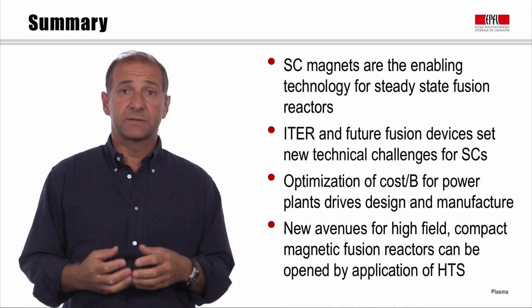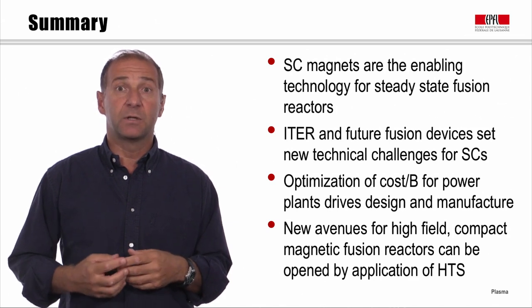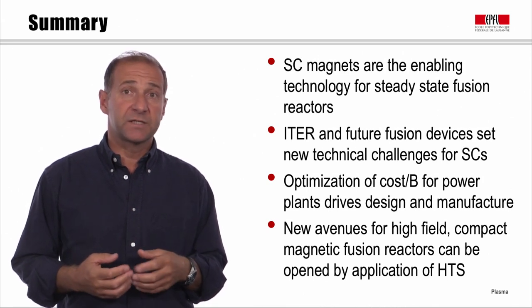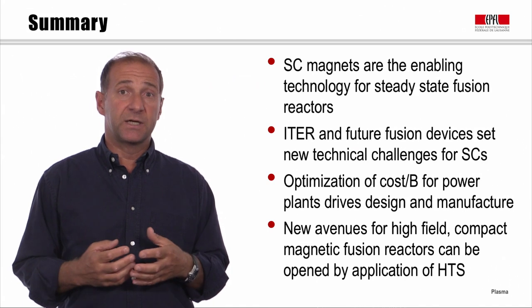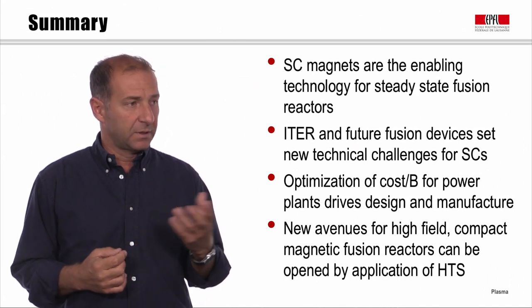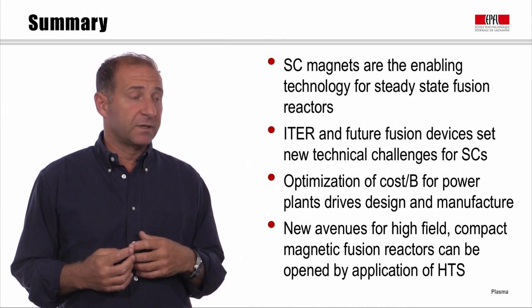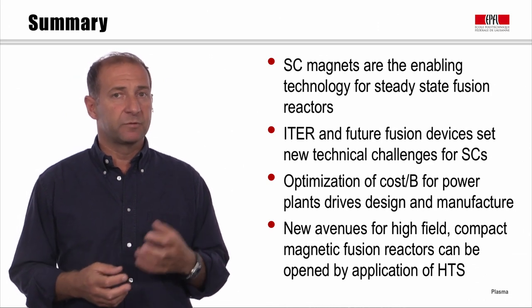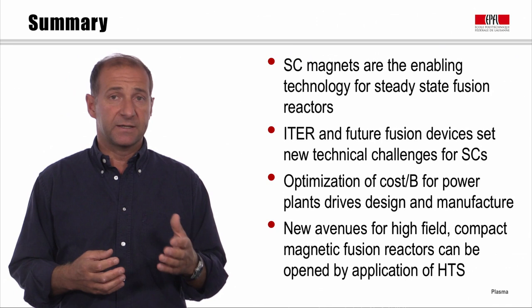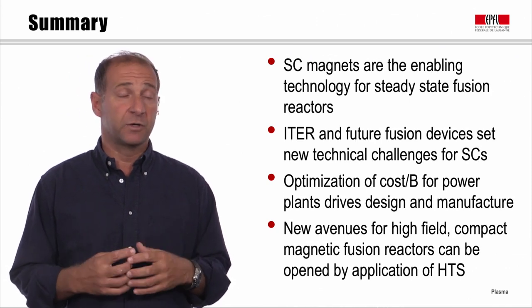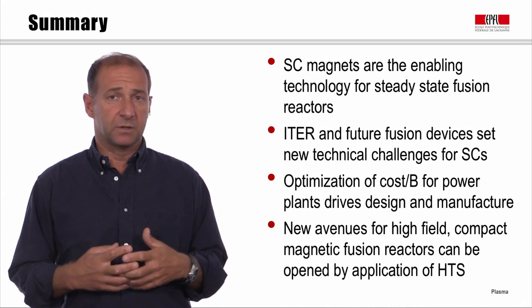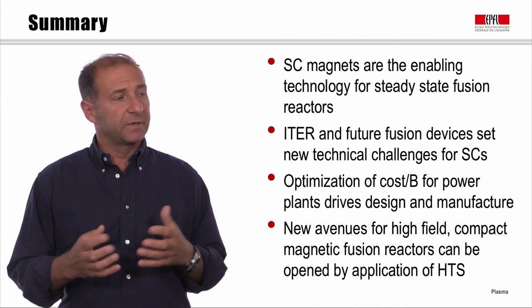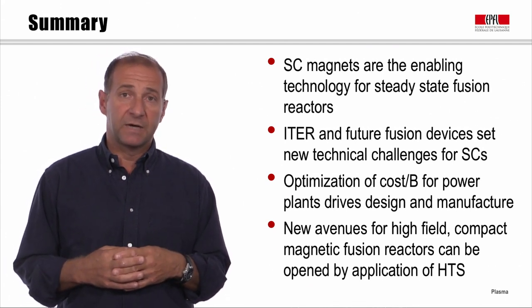In summary, superconducting magnets are a main enabling technology for fusion reactor development. ITER and all fusion devices we have in mind set new and very demanding technical challenges for superconductors. A main driver for the design and manufacture of the magnets and of the reactor is the optimization of the cost-to-performance ratio — that is, cost divided by the magnetic field intensity that can be produced over a large volume. New avenues for high-field compact magnetic fusion reactors can be opened by the application of high-temperature superconductivity.